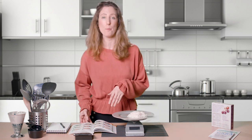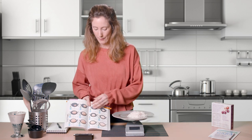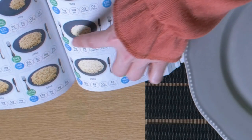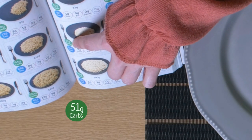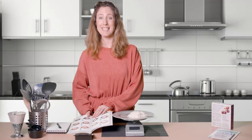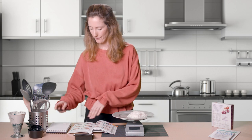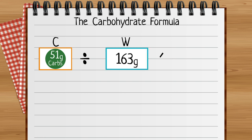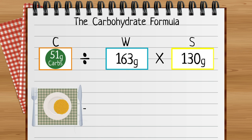I'm going to use the Carbs and Cals book, and the two pieces of information I need are the carbohydrate in the green circle and the weight. And now I'm going to do the maths. The calculation is C divided by W, multiplied by S, which gives me the carbohydrate in my serving of food.